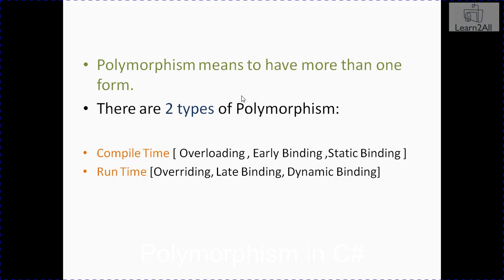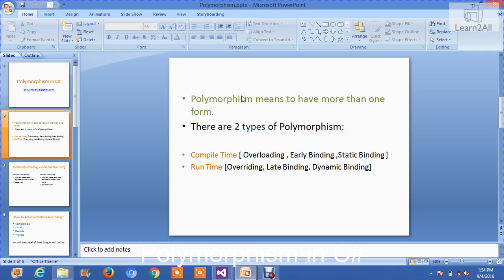We can say compile time polymorphism as method overloading, early binding, or static binding. And we can say run time polymorphism as method overriding, late binding, or dynamic binding. In this video tutorial series, we will learn these two types of polymorphism with the help of a practical example, and then we will check out the difference between method overloading and method overriding, and how to achieve compile time and run time polymorphism.